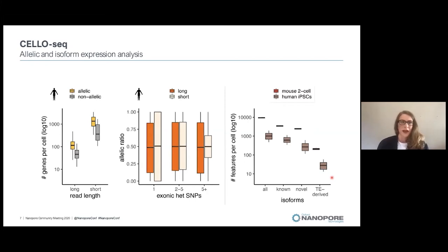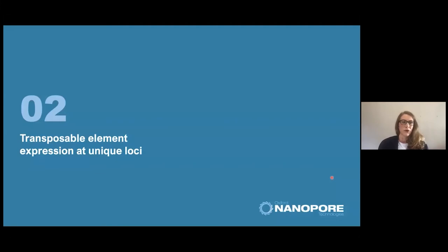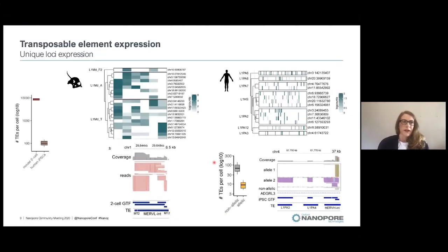But I told you that we want to use CELO-SEEK to look at transposable element expression at unique loci. Here, we looked at the expression of LINE elements, which is one class of transposable elements in the mouse and the human genome. You can see that a few elements are expressed in the mouse and the human genome, which is much less than can be found in the whole genome.